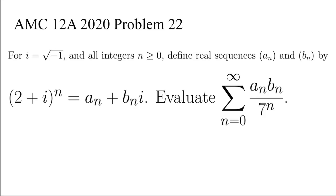For i equals the square root of minus 1, and for all non-negative integers n, define real sequences a_n and b_n by (2+i)^n = a_n + b_n·i. Evaluate the sum from n=0 to infinity of a_n·b_n over 7^n.